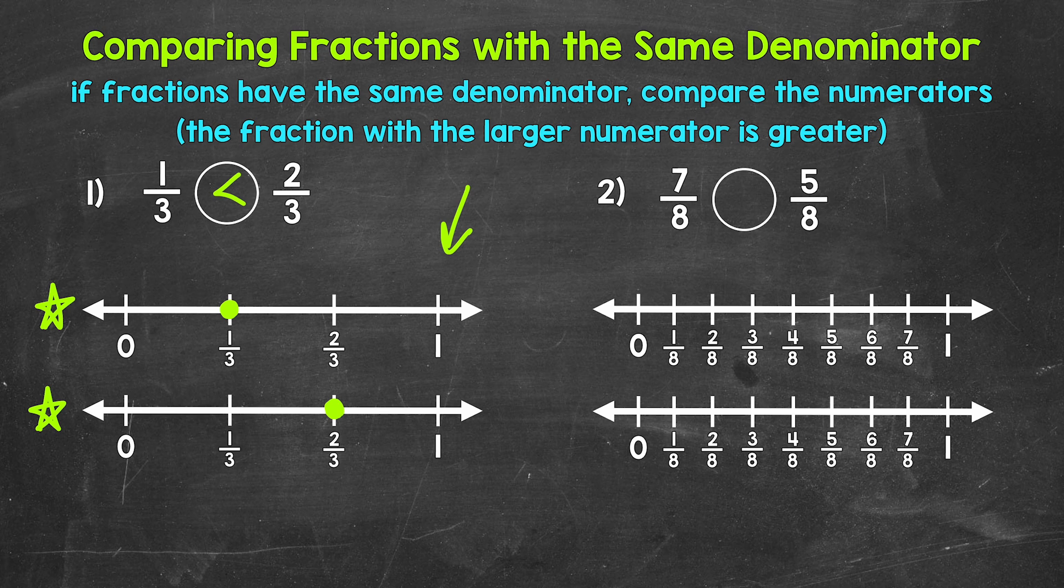Let's move on to number two, where we have seven-eighths and five-eighths. So reading this from left to right, we have seven-eighths is greater than, less than, or equal to five-eighths.